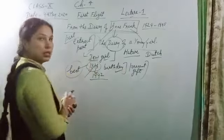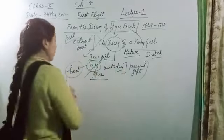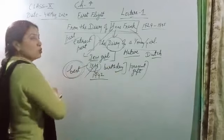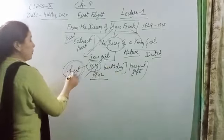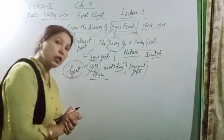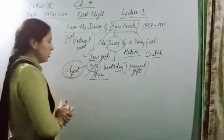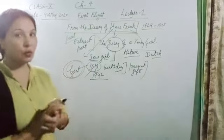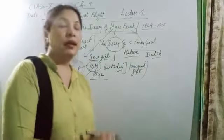So in 1942 she got the diary at her 13th birthday - her father gave it to her. She decided to write the diary because she was not having any best friend. Because she had no best friend, she decided to write the diary.